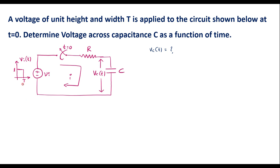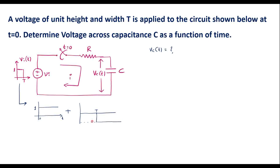The input signal Vi(t) can be split into two signals. This is a unit step signal having magnitude 1, and at t equal to τ we add one negative step signal of magnitude minus 1. If we add these two signals we will get the original signal. So this signal is nothing but u(t) minus u(t − τ), and therefore Vi(t) = u(t) − u(t − τ).